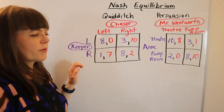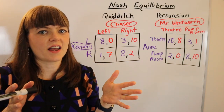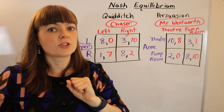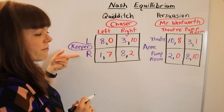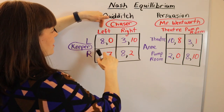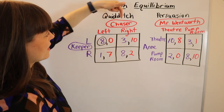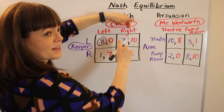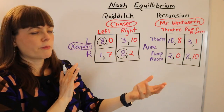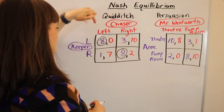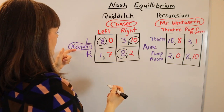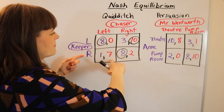Our next example is a Quidditch example, where the keeper or goalie is trying to decide: do I anticipate left or right? And the chaser trying to score is deciding: do I hit the ball right or left? From the keeper's perspective: if the chaser went left, would I prefer the eight or the one? I'd prefer to have gone left to stop the ball. If the chaser goes right, I prefer to have anticipated right for a payoff of eight rather than three. Then from the chaser's perspective: if the keeper anticipates left, I like the 10 better. And if the keeper anticipates right, I prefer to have shot left.